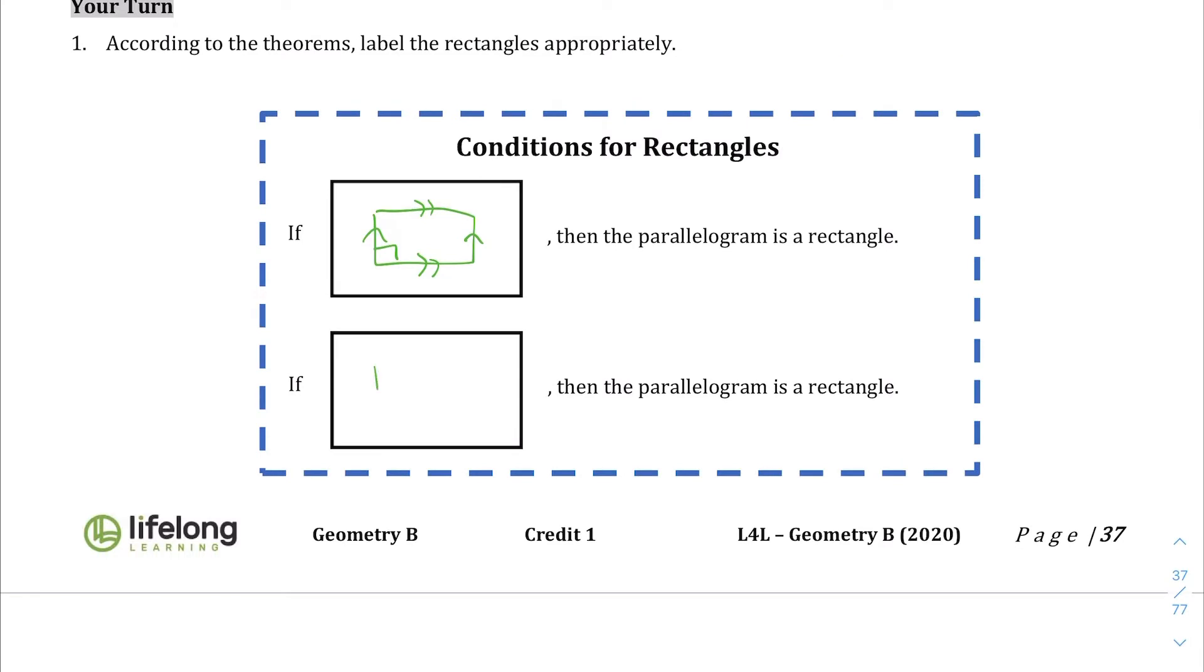And then the other one was that if you have a parallelogram where you have two pairs of parallel sides, if you drew the diagonals and the diagonals are congruent to each other, then you have a rectangle.